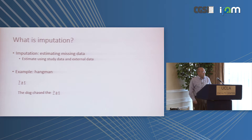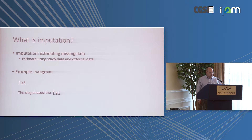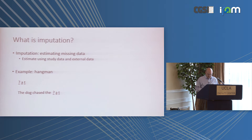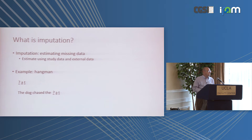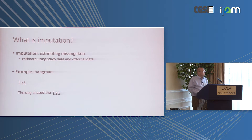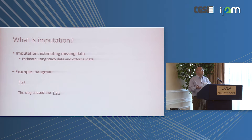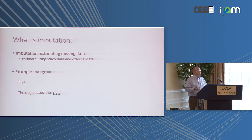Imputation is just estimating missing data. You can use the other data in the data set you have and external data sets. If you have played any word games, you've done imputation. The classic example is hangman. Hangman gives a good illustration of a general principle of imputation: the more context you have, the better you can fill in or estimate that missing data.